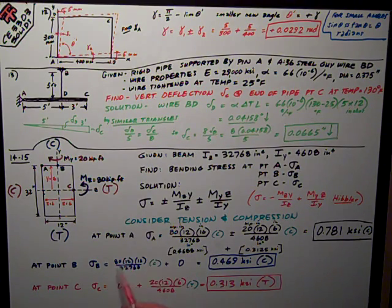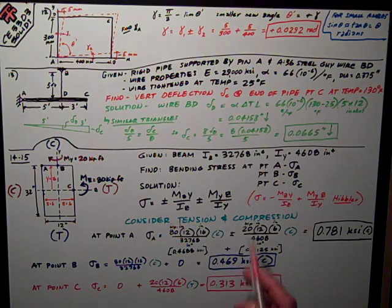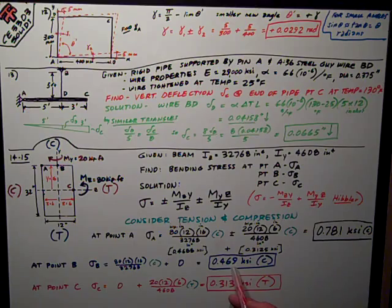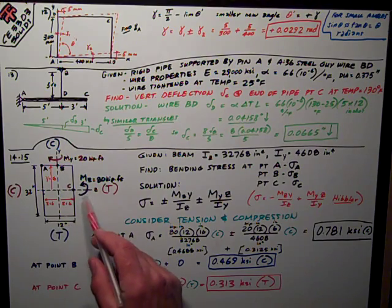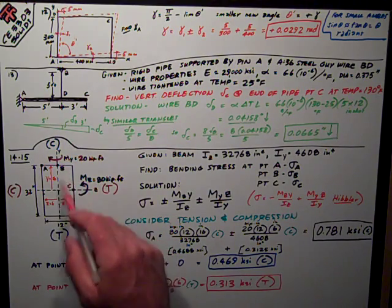My y-distance is still the same as it was up here for point A, so it's just this number. The y-moment about the y-axis stress is zero, so it's just 0.469 ksi. It's compression because once again it's on the top part above the z-axis.